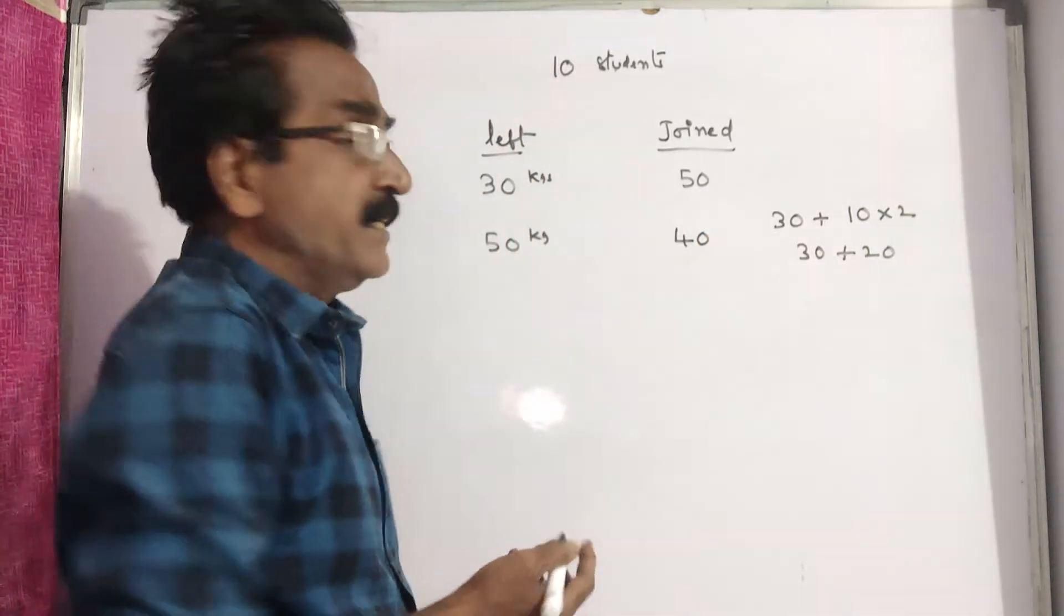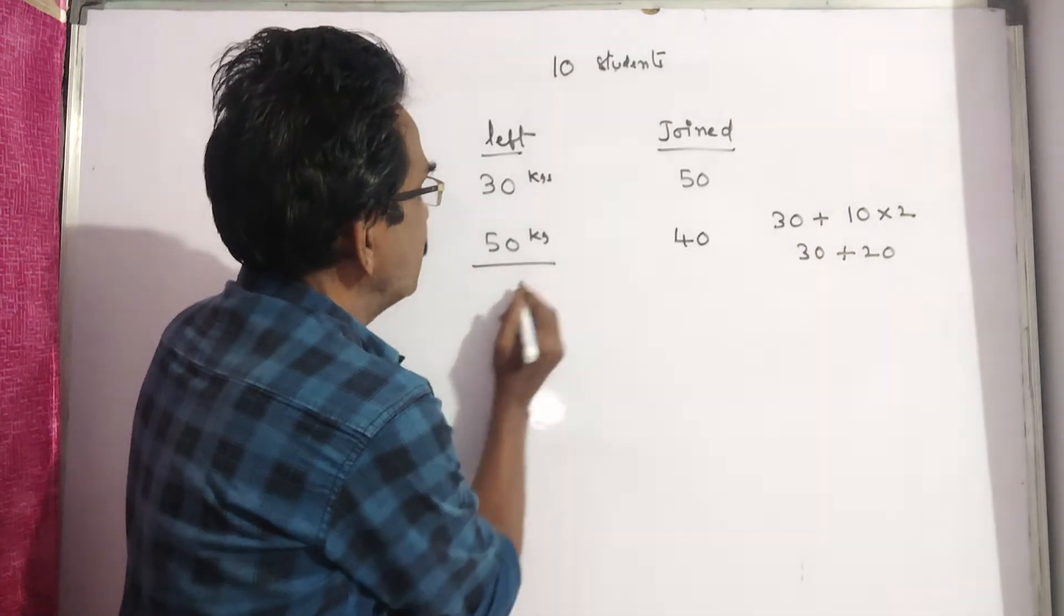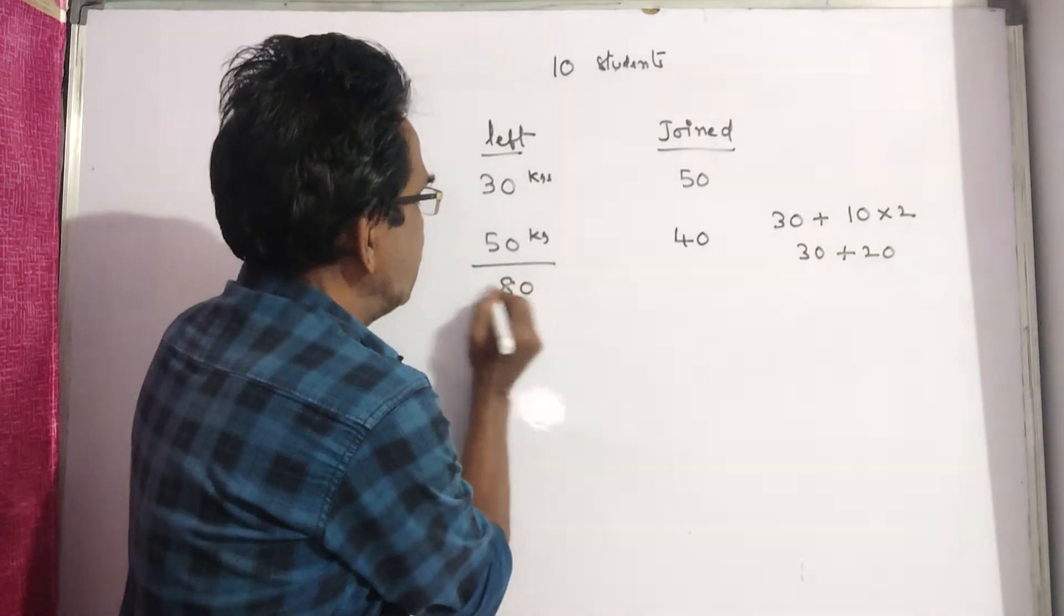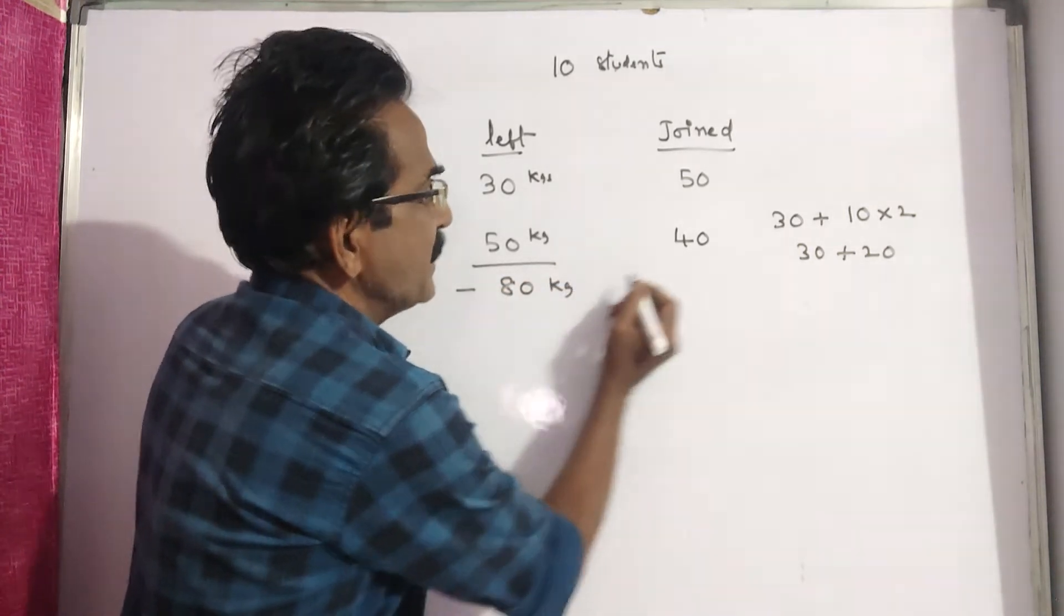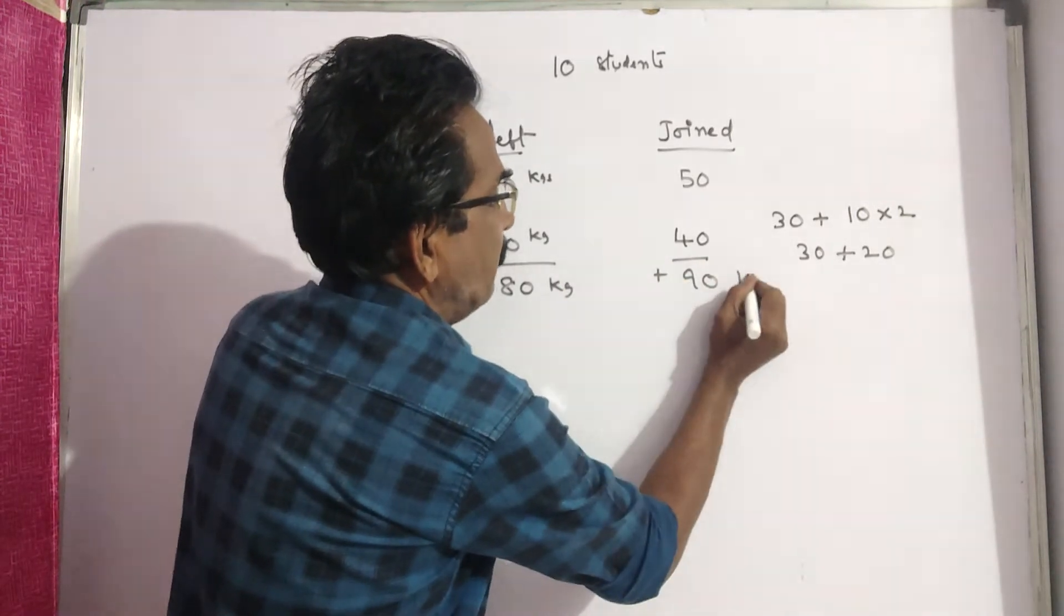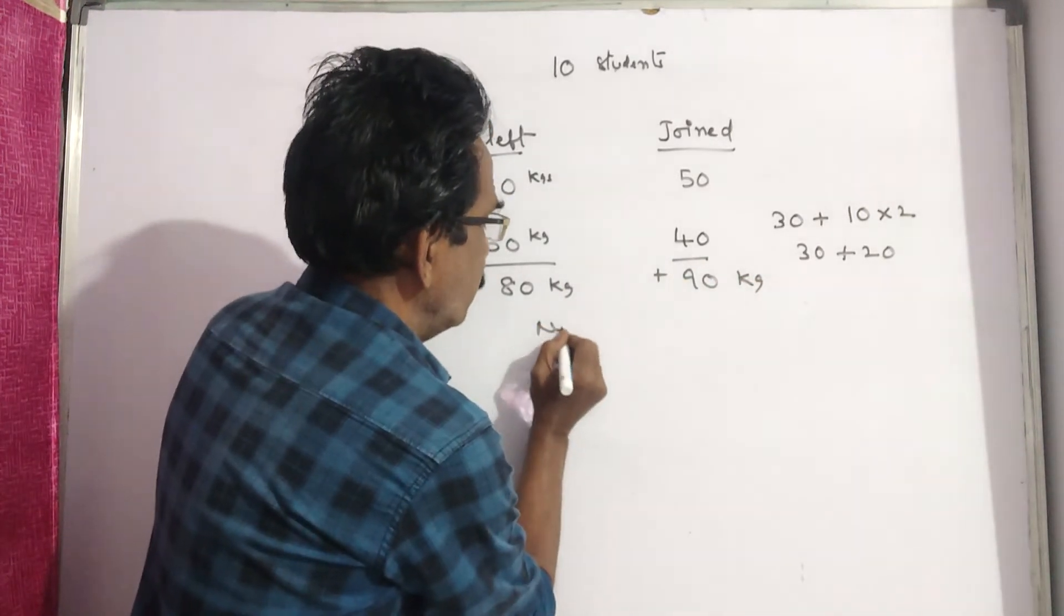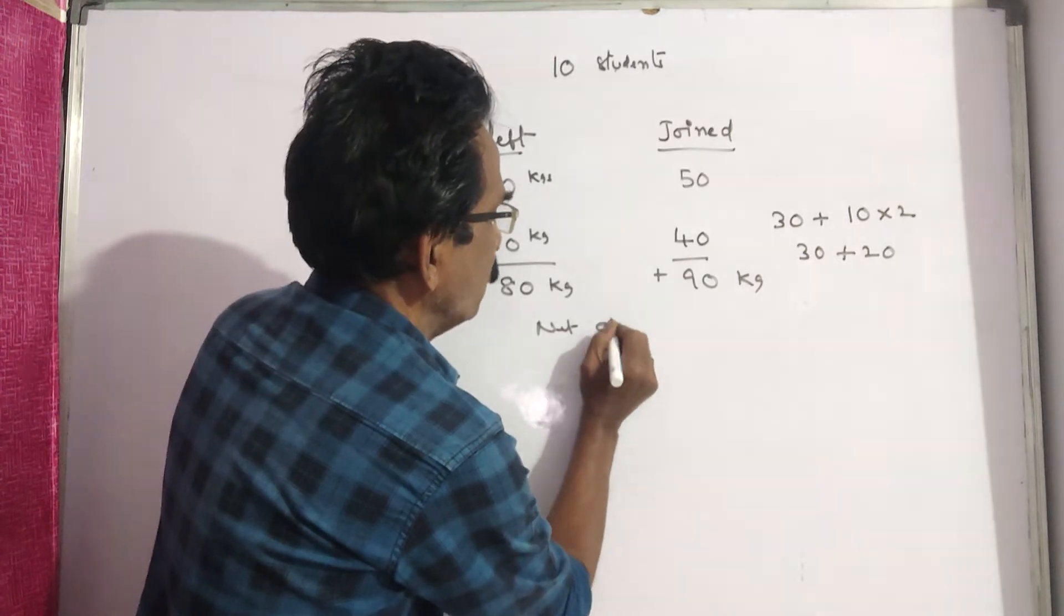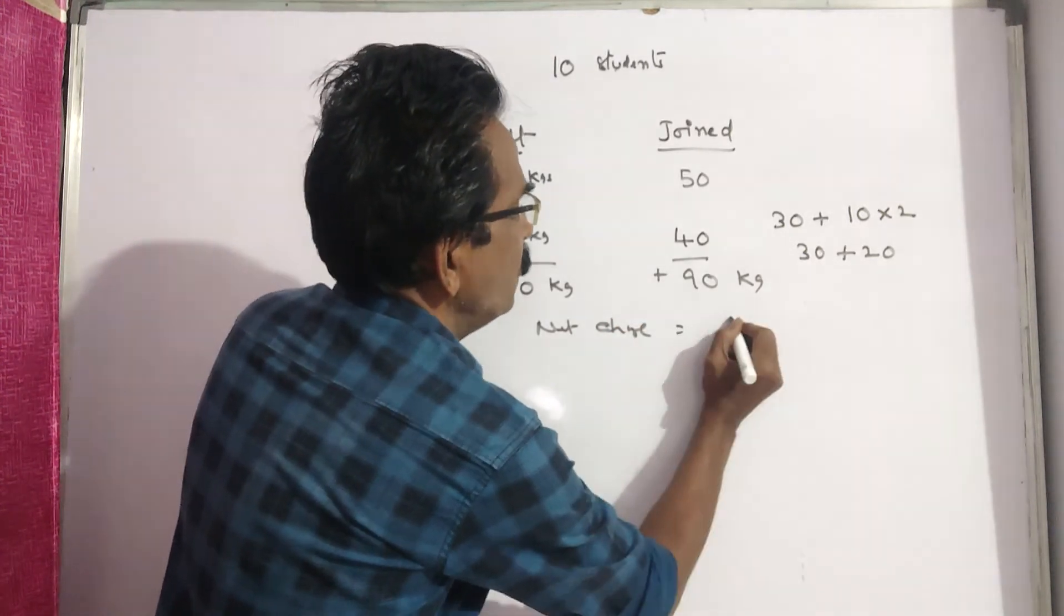So overall, what is the net change? 80 kgs left minus 90 kgs joined. That is plus net change. Net change is equal to 10.